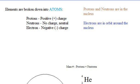Protons have a positive charge, neutrons have a neutral charge or no charge, and electrons have a negative charge.